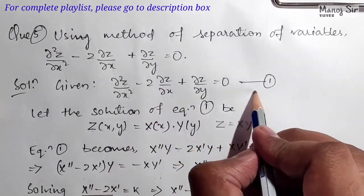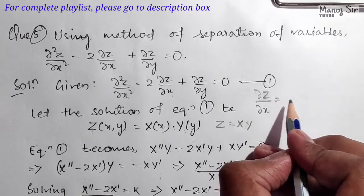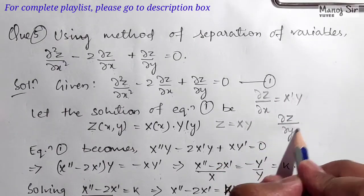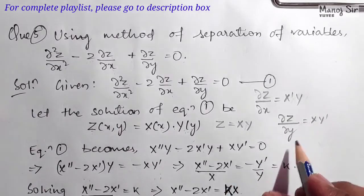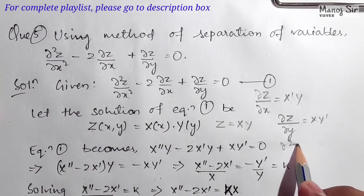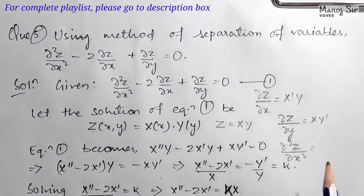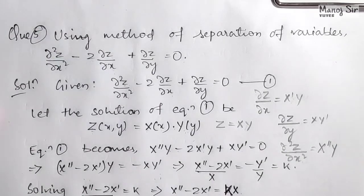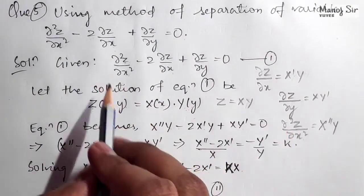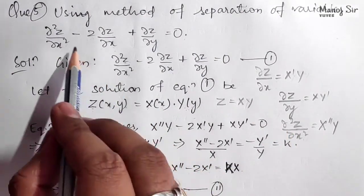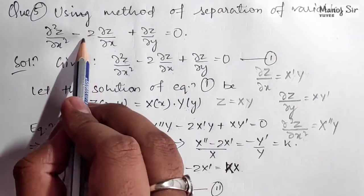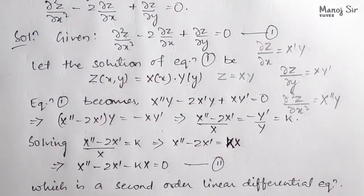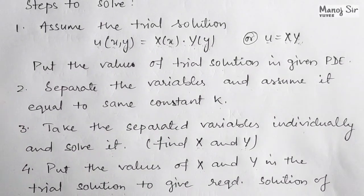From z equals X·Y, we get del z upon del x equals X' times Y, del z upon del y equals X times Y', and del squared z upon del x squared equals X'' times Y. Substituting all these into equation (1), it becomes X''Y minus 2X'Y plus XY' equals zero.